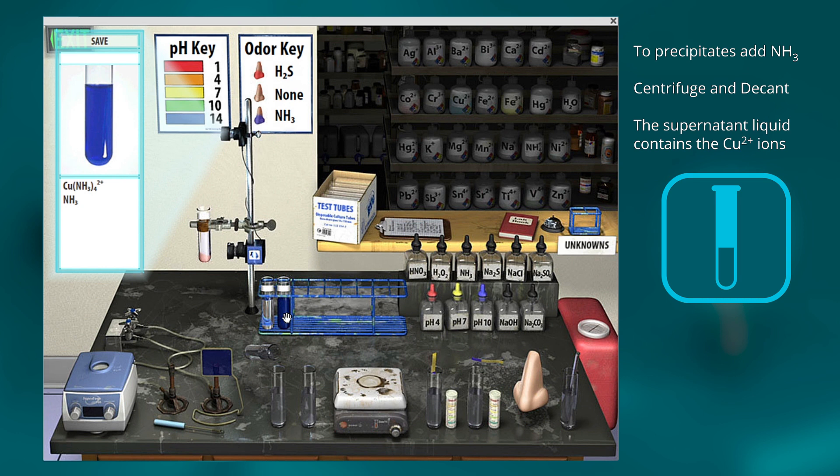And now in this tube, I've separated off the copper. So that's how we separate out copper, making it hydroxide, then adding the ammonia.